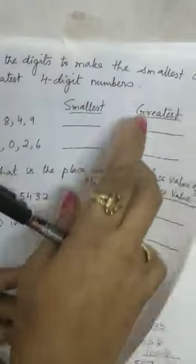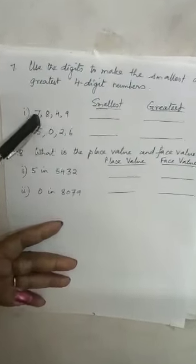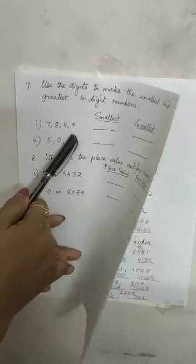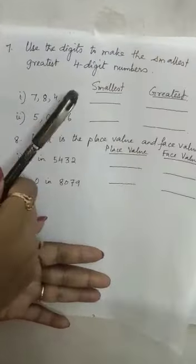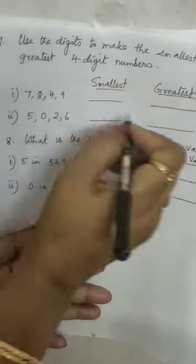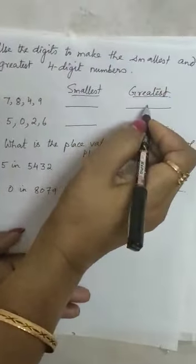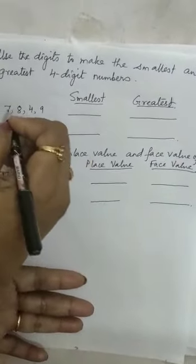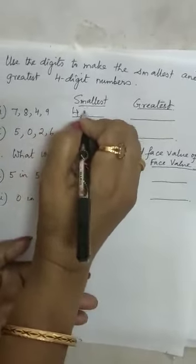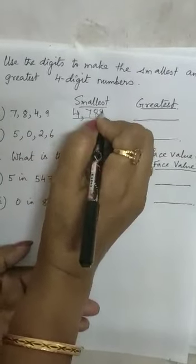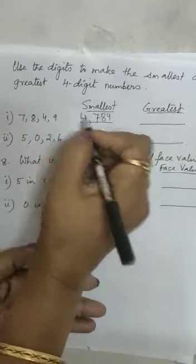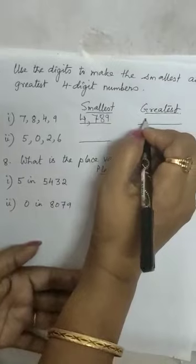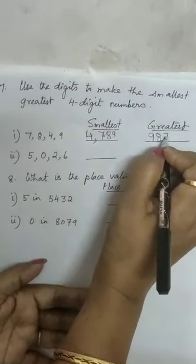Now we will go to the next question: use the digits to make the smallest and the greatest 4-digit number. These are all digits — when I put a comma after a number, it is only a digit. Now I will make the number with these 4 digits. Smallest means arrange in ascending order, greatest means descending order. So the smallest is 4789 and the greatest is 9874.